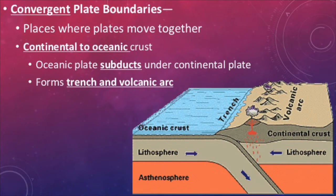The next type of plate boundary is a convergent boundary. This occurs in areas where convection currents pull magma downwards. As a result, crust is destroyed and the plates move towards one another. The type of crust involved determines the effects of the boundary. If you have a continental-oceanic convergent boundary, the denser oceanic crust will subduct or sink beneath the continental crust. This forms an oceanic trench at the actual meeting of the plates and a volcanic arc on the continental shelf.